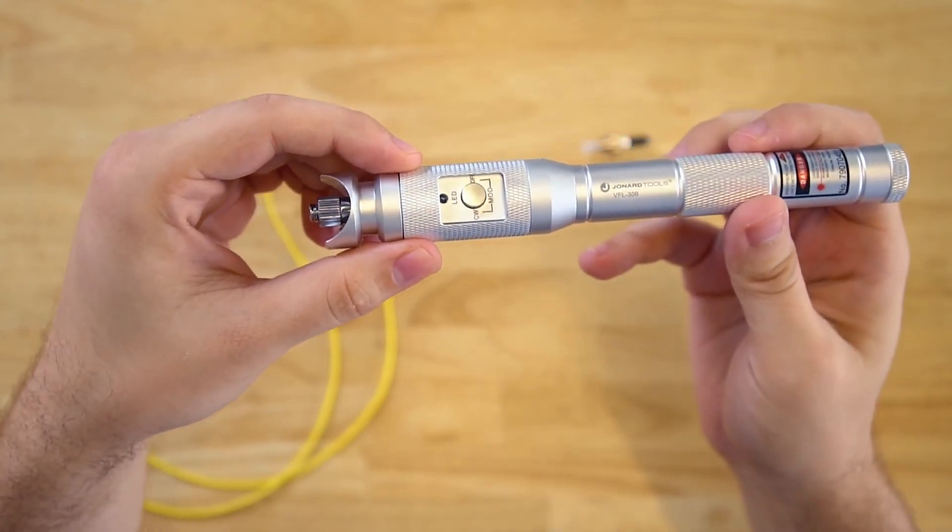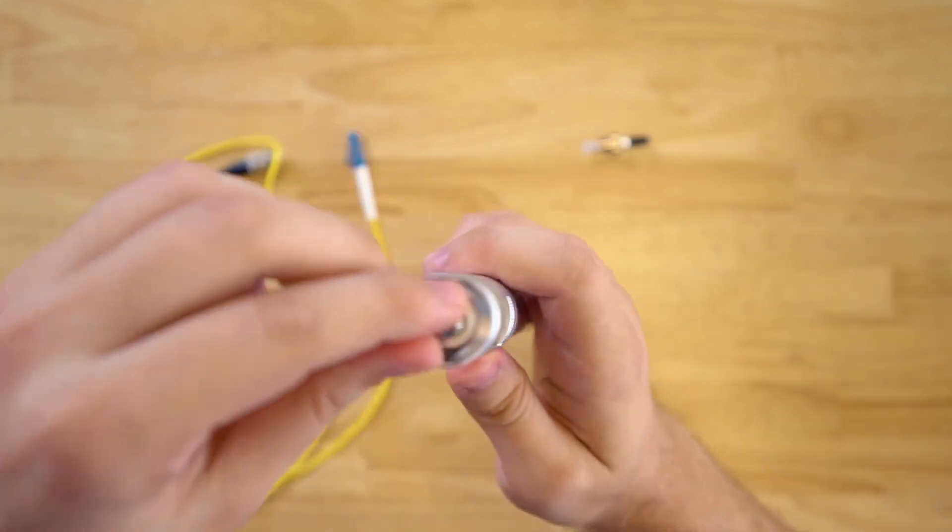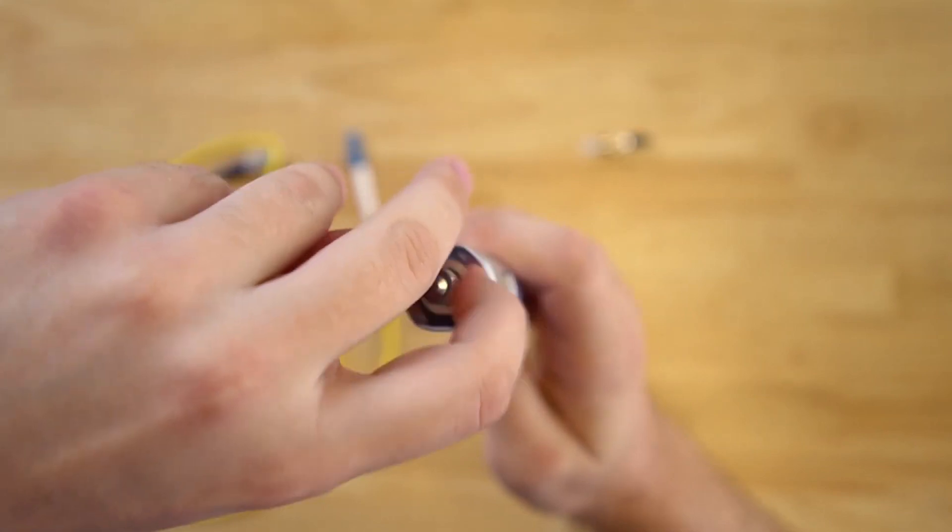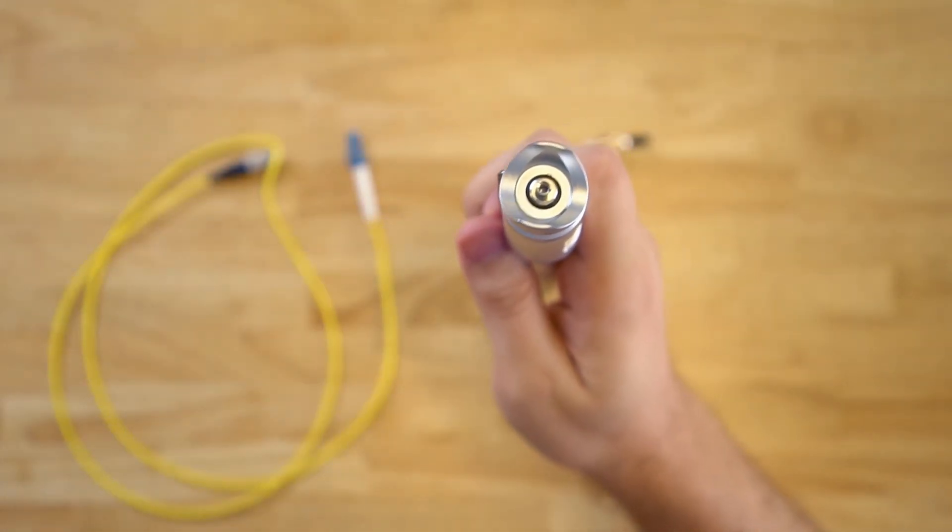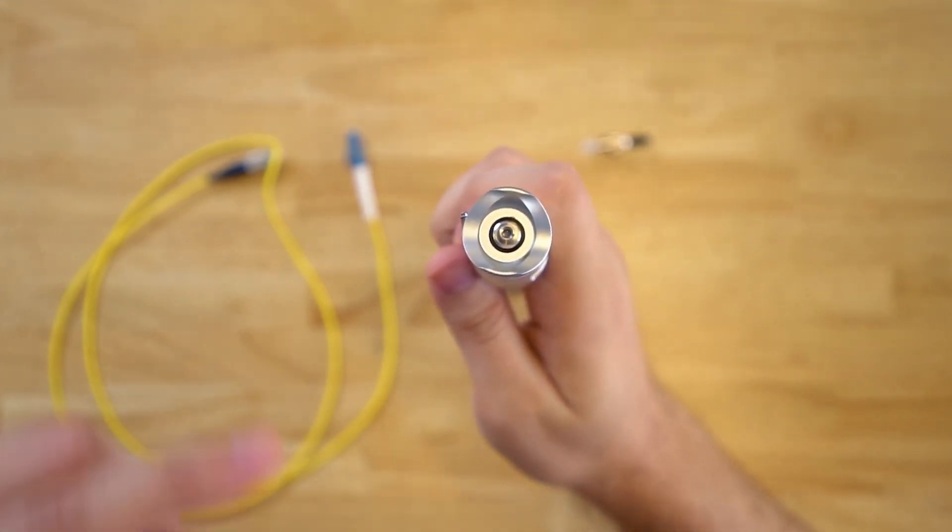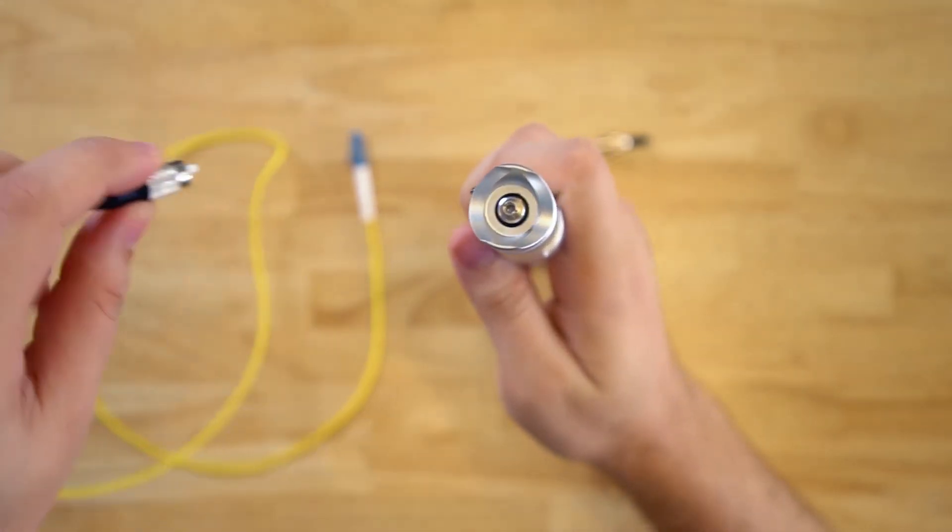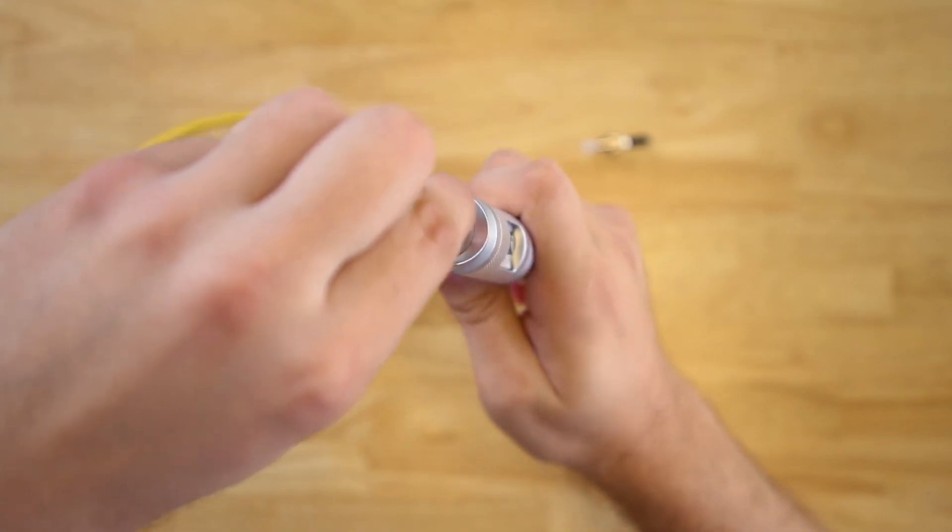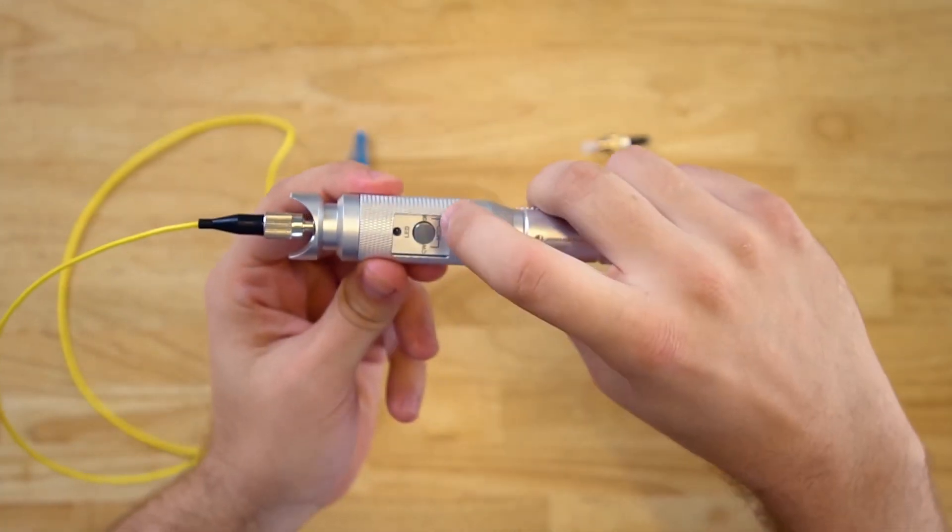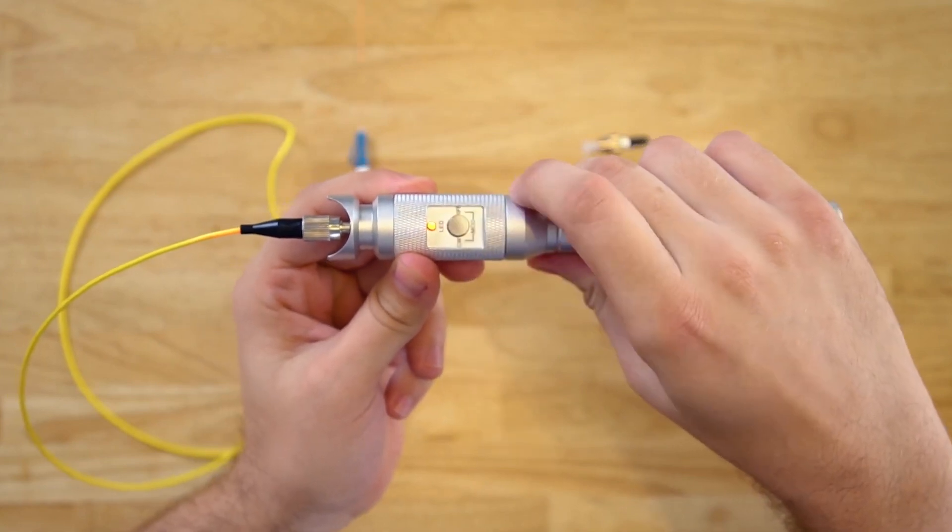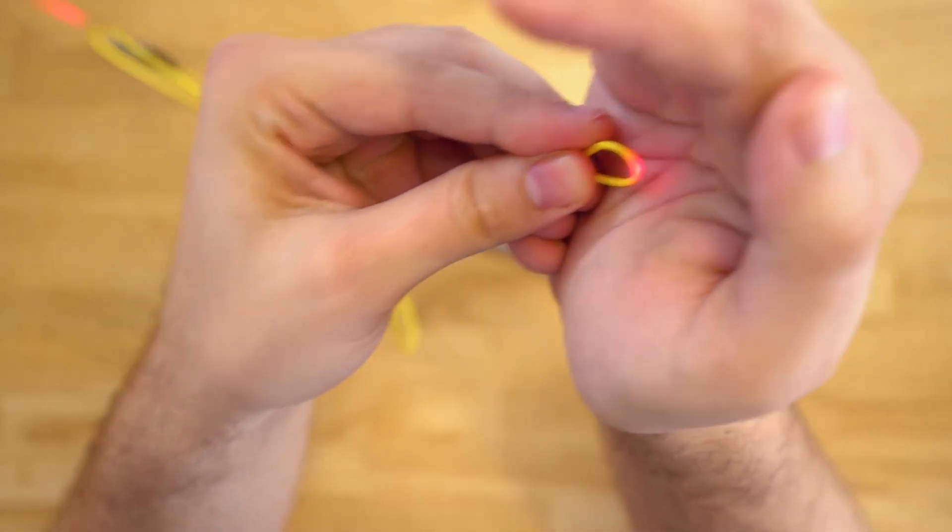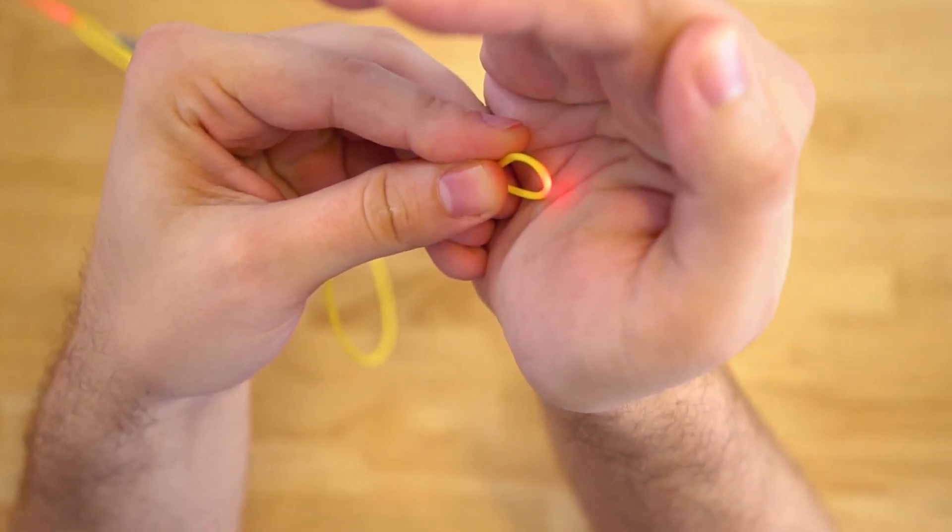When you want to use this on a fiber optic cable, first unscrew the dust cover. And if you're using an FC, SC, or ST connector, you can connect it directly to the VFL. Next, turn on the mode to continuous wave or whatever mode you feel. You'll notice that you can detect the faults in the fiber optic cable fairly easily.